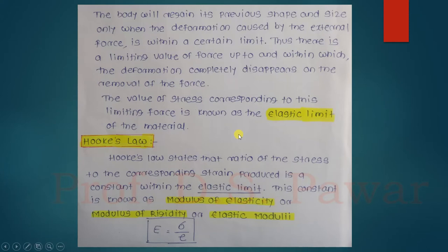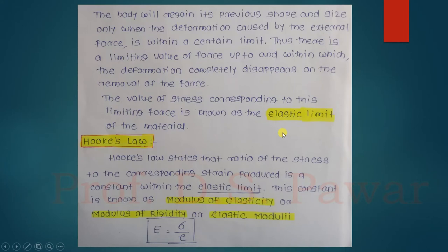The elastic limit is the limit within which the body will regain its original shape and size. We will study this elastic limit further when we examine mild steel under the universal testing machine — at that point I will explain what the elastic limit is. Next, an important concept related to elasticity and the strength of solid materials is Hooke's Law.